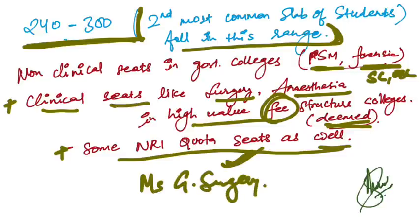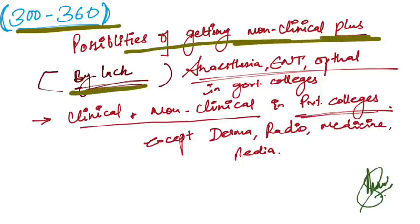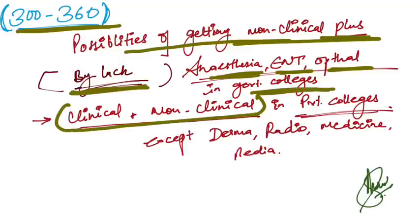If your score is lying in 300 to 360, there is probability of getting non-clinical plus by luck anesthesia, ENT, or ophthalmology in government colleges. You can get clinical and non-clinical branches in private colleges except dermatology, radiology, medicine, and pediatrics. Other clinical branches you can expect in private colleges in this rank, and also non-clinical branches in government colleges.